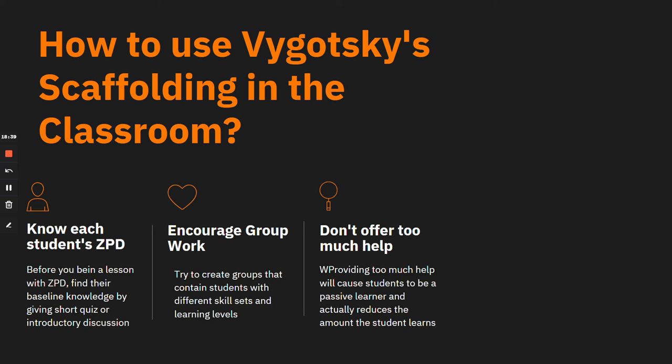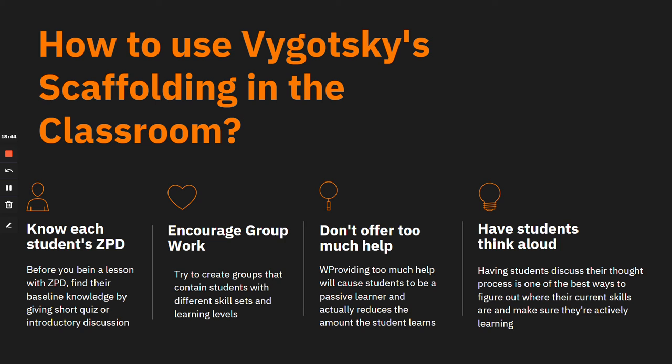Fourth, have students think aloud. Vygotsky believed that when students speak their thoughts, it helps them more. It is one of the best ways to figure out where their current skills are and ensure they are actively learning. As a student works on a project, have her talk about why she's making certain decisions, what she thinks she should do next, and what she's unsure about. When you give advice, also explain your own thought process so students understand why you are making the decisions you did. That covers Vygotsky's scaffolding theory.